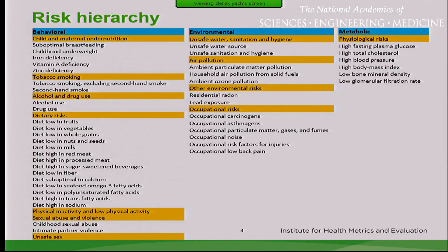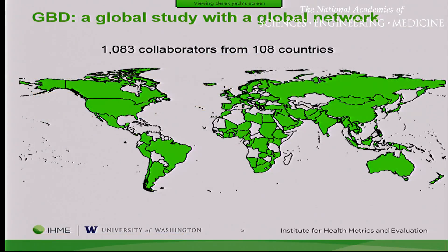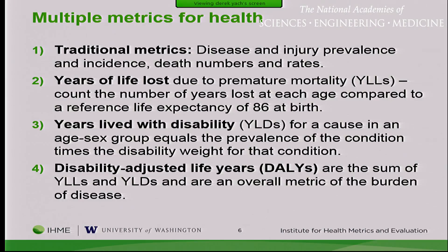We have so many risk factors and it's hierarchical — behavioral, environmental, and metabolic. We go from diet, high body mass index, blood pressure, occupational exposure, environmental exposure, indoor cooking, indoor exposure to harmful substances. And then we have about over 1,000 collaborators in 108 countries. We cannot do this ourselves at IHME in Seattle, University of Washington, without having people from each country telling us what data is available and helping us to do our product.